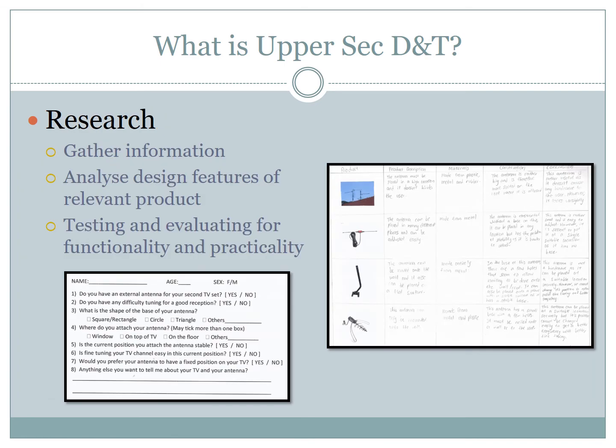Research supports all stages of the design process. Information from various sources is used for decision making, such as the shape and form of your artifacts, the size, the material used, and the function.